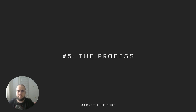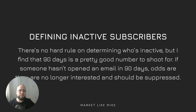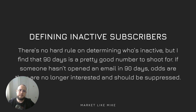Now that you have a basic idea of what list cleaning is, what its purpose is, and what the benefits are, let's get down to the nitty-gritty of how it's done. Here is how the process works. First, you have to define your inactive subscribers and segment them from the rest of your active subscribers. There is no hard rule on determining who's inactive, but as a rule of thumb, 90 days is a pretty good number to aim for. If someone has not opened a single email in the last 90 days, odds are they're no longer interested and they should probably be removed. The only exception would be if you're sending emails at an extremely low frequency — meaning less than one per month. But if you're sending at least one email per week, then 90 days is definitely a safe number.